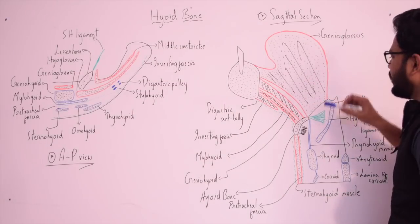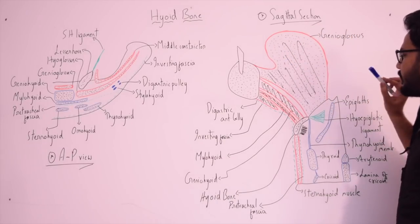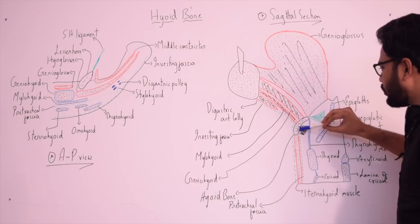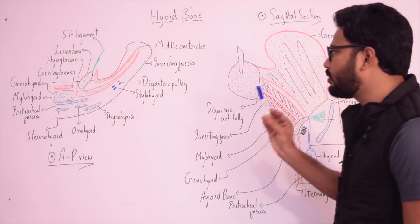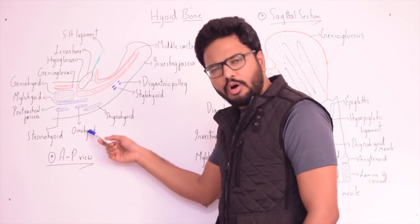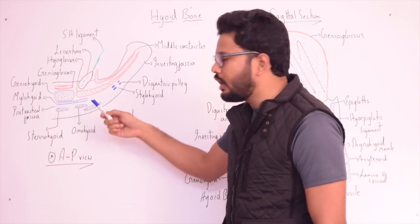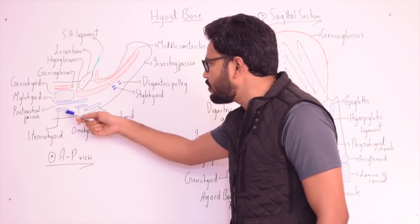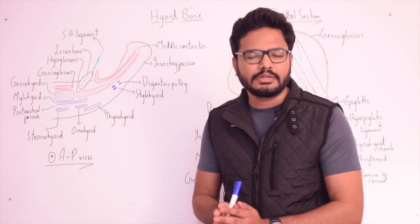The upper border of the hyoid receives the lower fibers of the genioglossus muscle and also the thyrohyoid membrane. The lower border receives attachment to the pretracheal fascia, and in front of the pretracheal fascia the sternohyoid muscle is attached medially, the omohyoid muscle is attached laterally, and just beneath the omohyoid there is a linear attachment of the thyrohyoid muscle.